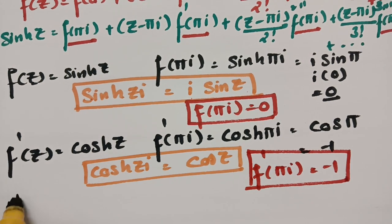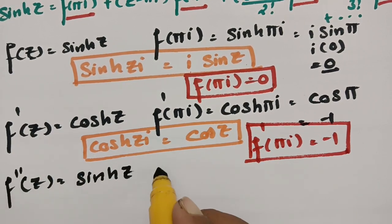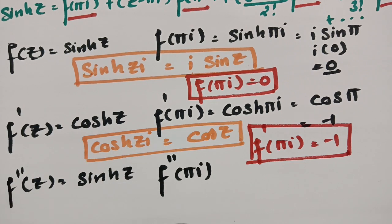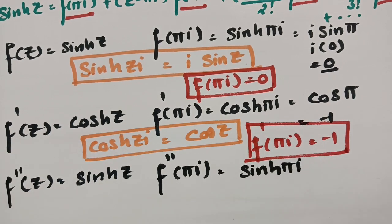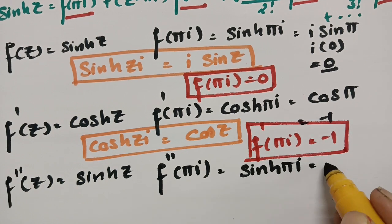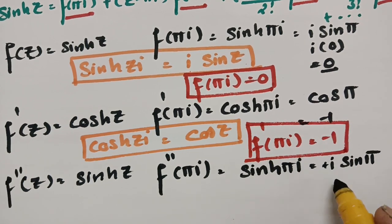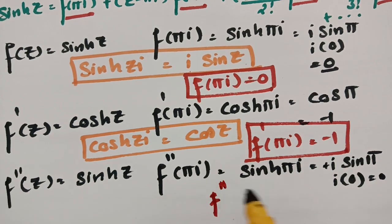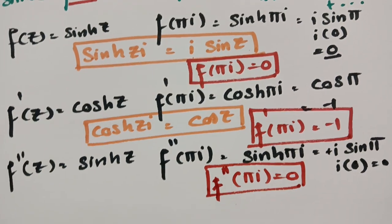For the second derivative, f''(z) = sinh(z) (note there are no negative signs for hyperbolic functions). So f''(πi) = sinh(πi). Again using sinh(iz) = i·sin(z), this gives i·sin(π) = i·0 = 0. Therefore f''(πi) = 0.